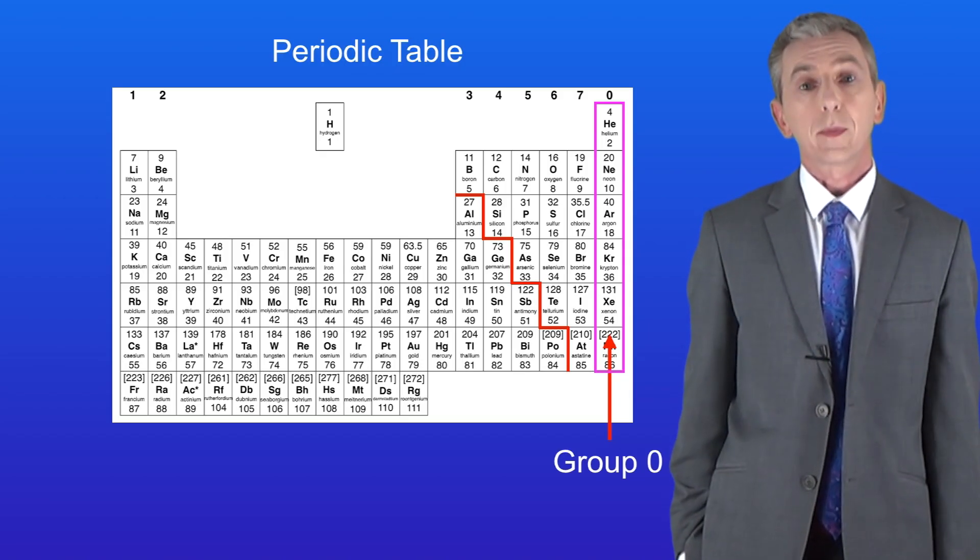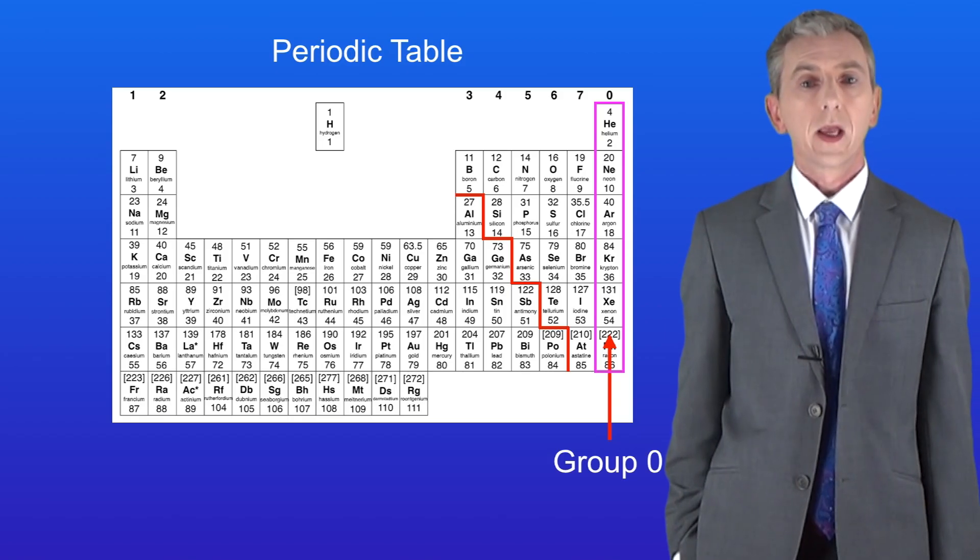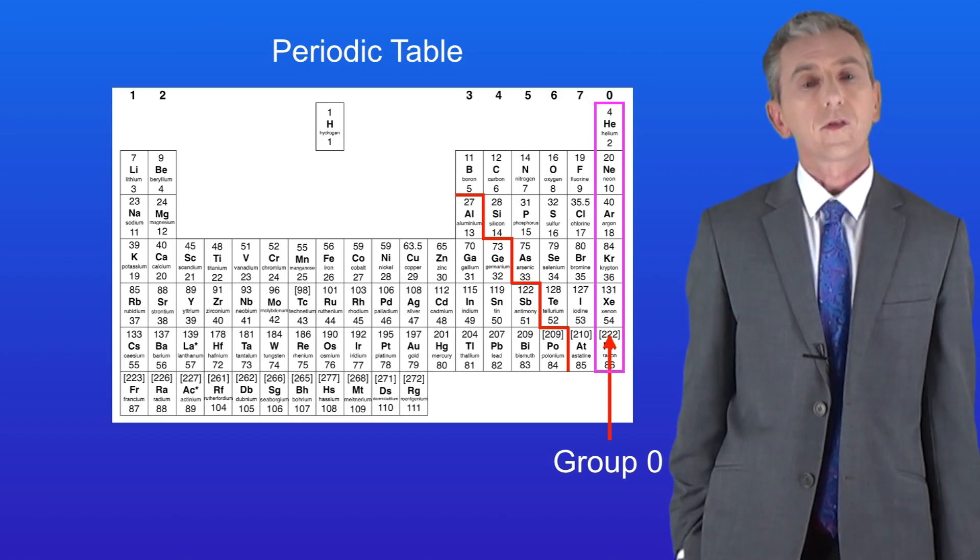The original periodic table produced by Dmitry Mendeleev did not feature group zero. That's because these gases were not fully discovered until after Mendeleev developed his table.